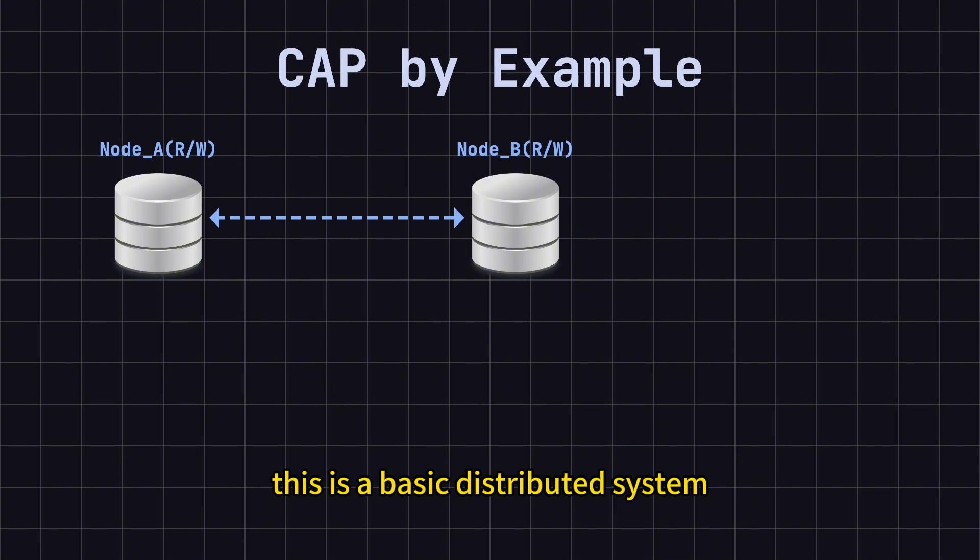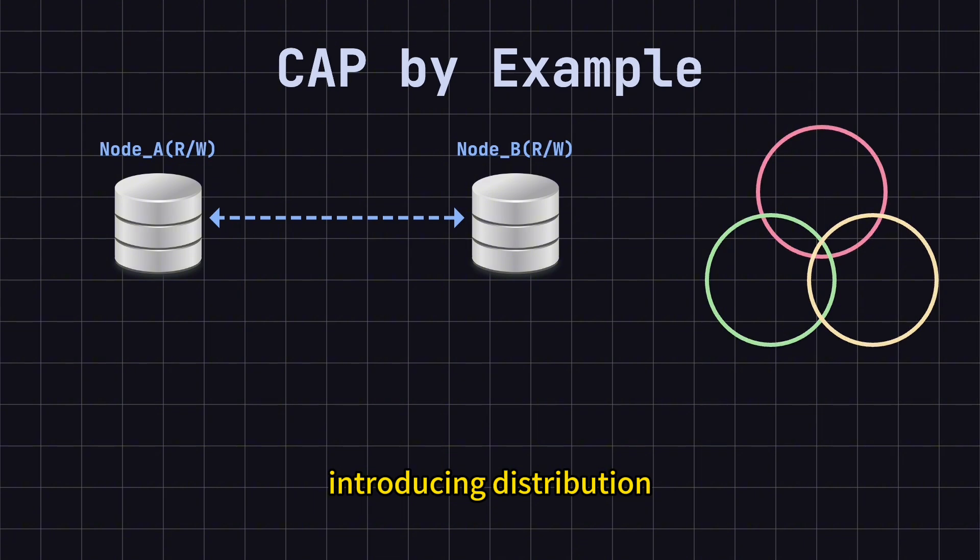This is a basic distributed system because the same data is stored on two different nodes, leading to consistency issues. Even in a master-slave setup, where one node is read-write and the other is read-only, consistency issues arise since the same data exists on different nodes. As long as the same data is stored on two or more different nodes, you have a distributed system, and consistency becomes an issue. Introducing distribution brings us to the challenges of the CAP theorem.